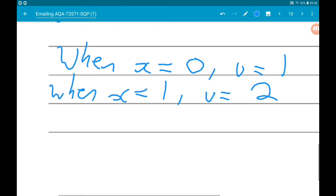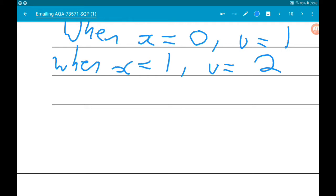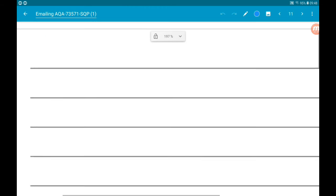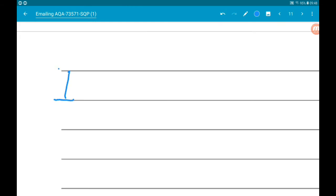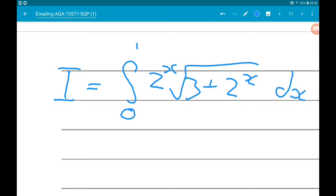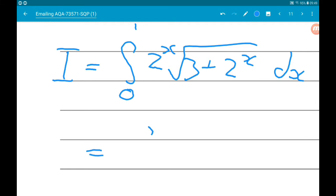So our integral, which was the integral from 0 to 1 of 2^x times root(3 + 2^x) with respect to x, is now the integral between 1 and 2 of u times root(3 + u).